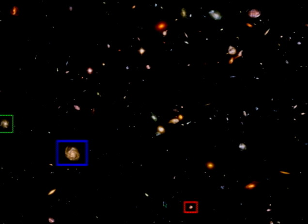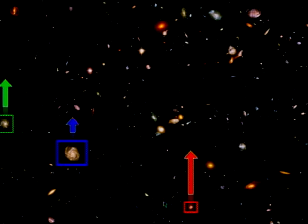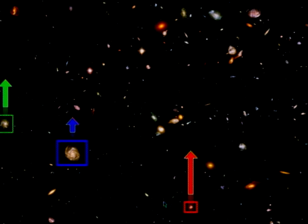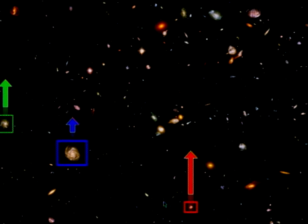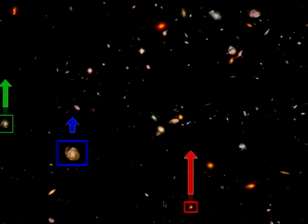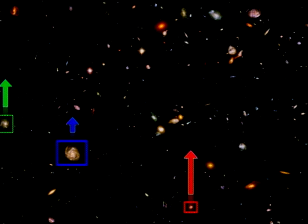What Hubble noticed is that galaxies that are further away from us, like the red one, are moving away from us at fast speeds, while galaxies that are closer to us are also moving away from us, but at slower speeds. And that is independent of the direction in the sky that you look at.